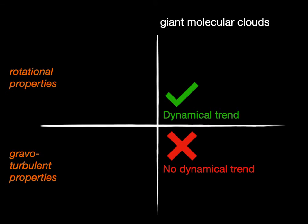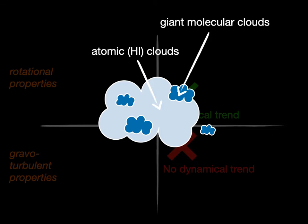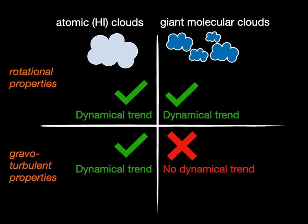To better understand this result, we have also looked at the H1 clouds, clouds of cool atomic hydrogen that are less dense and larger than the giant molecular clouds. They are thought to be the reservoirs of cool gas out of which the cold molecular clouds form. We find that these clouds display a larger range of dynamical couplings in their gravoturbulent as well as rotational properties.